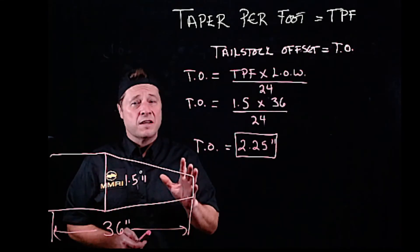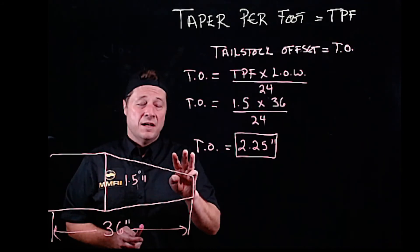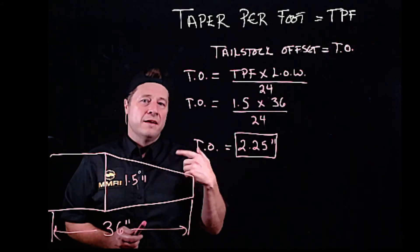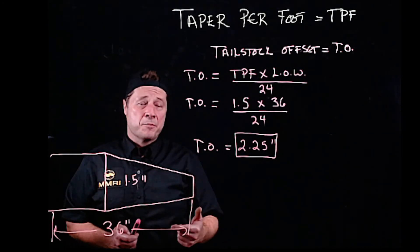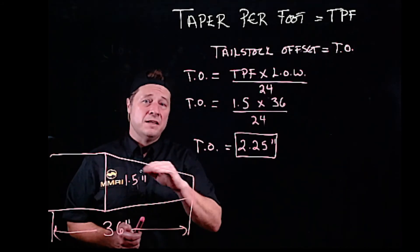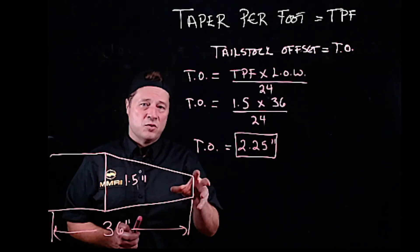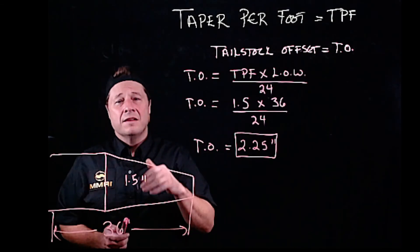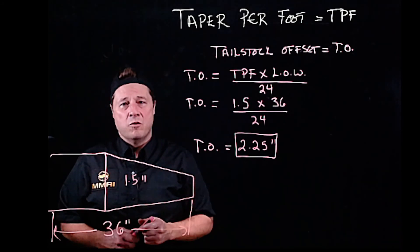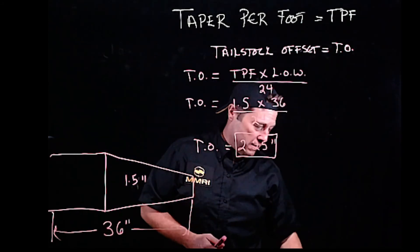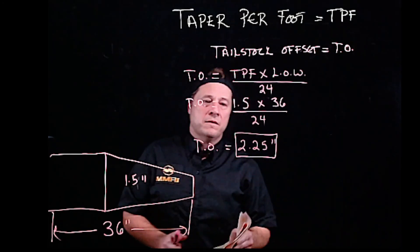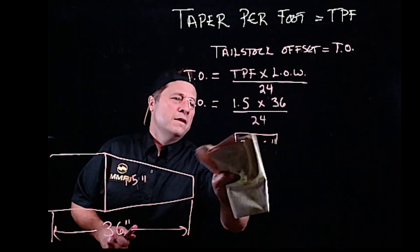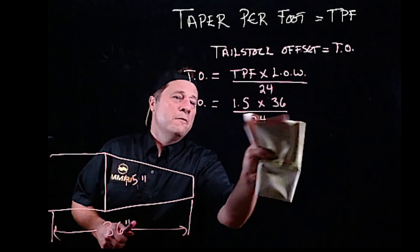I will tell you, these three formulas you will need to know them. Get them in your head: taper per foot is big D minus little D divided by length of taper times 12. Tailstock offset is taper per foot times length of work divided by 24. And then our last formula is for setting up our compound rest.